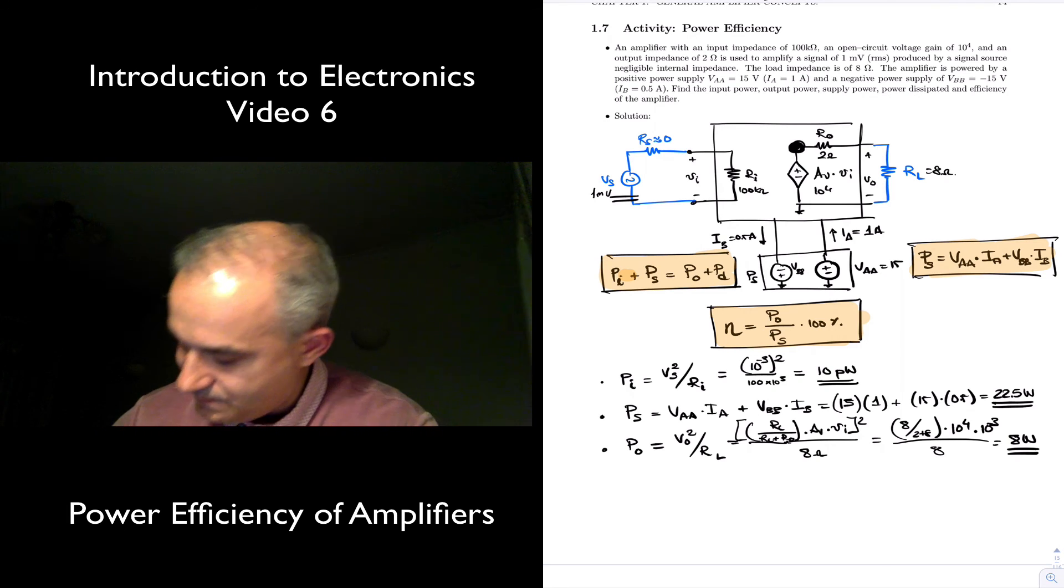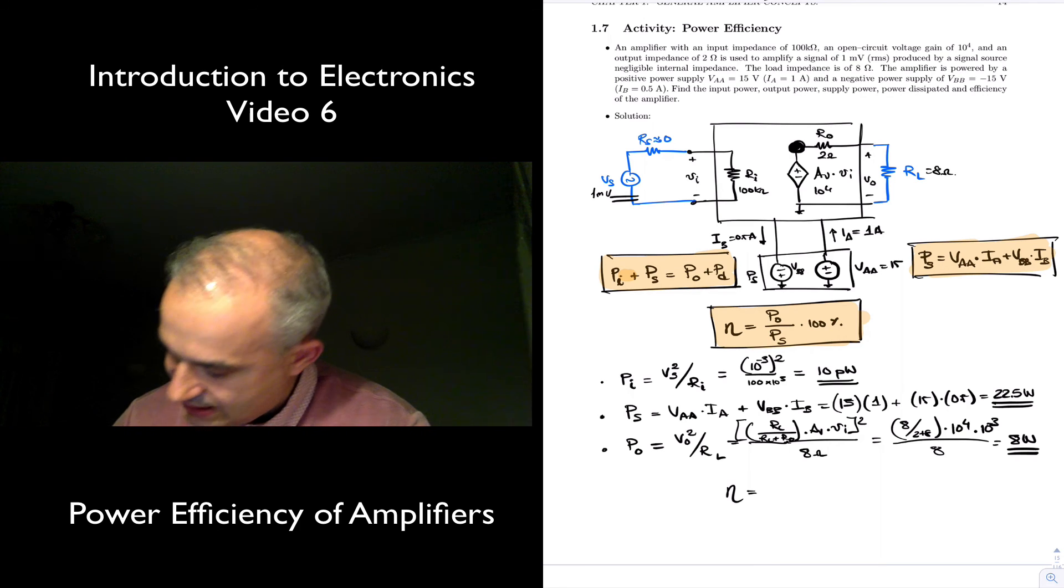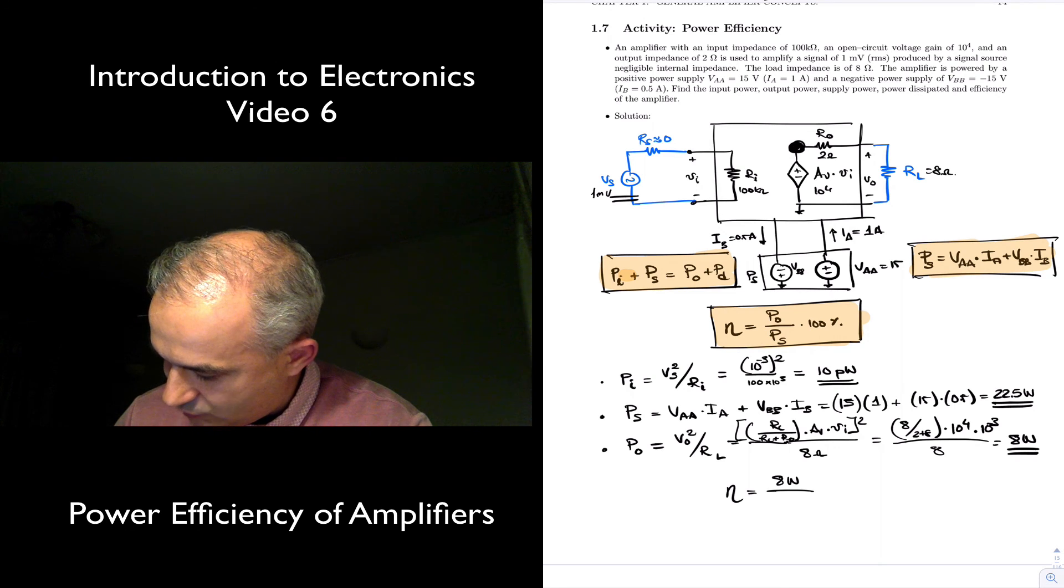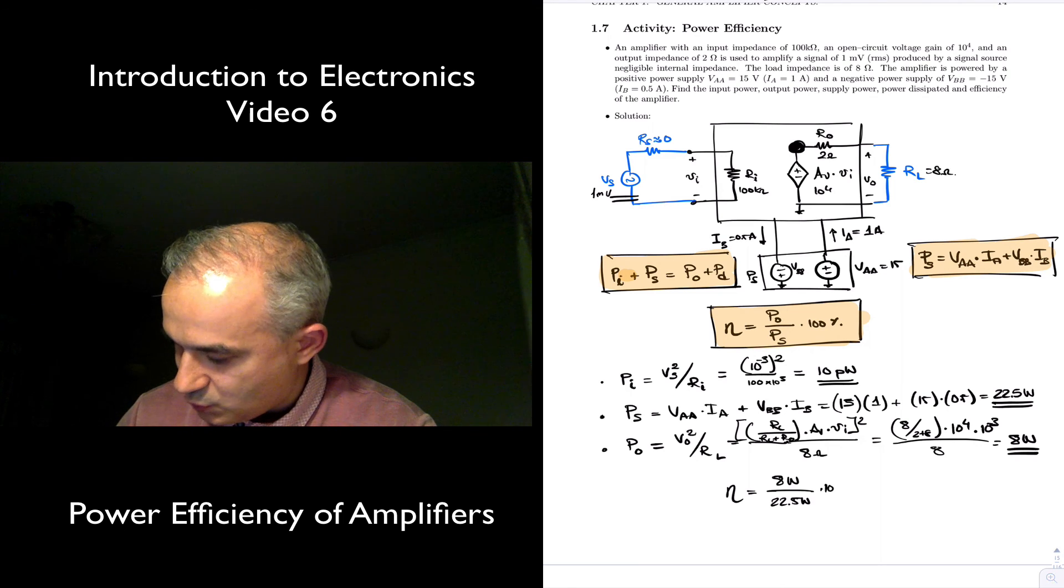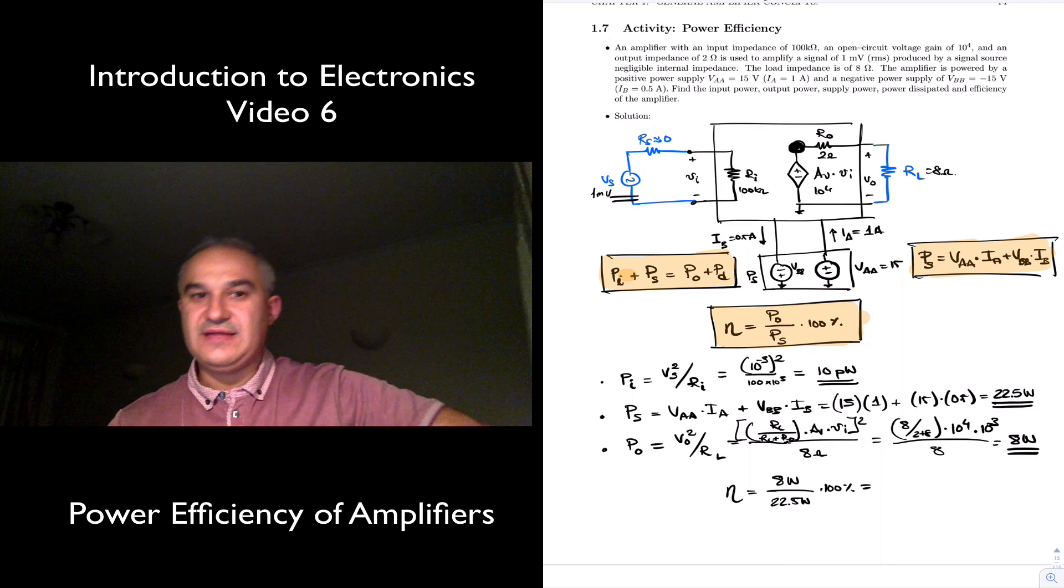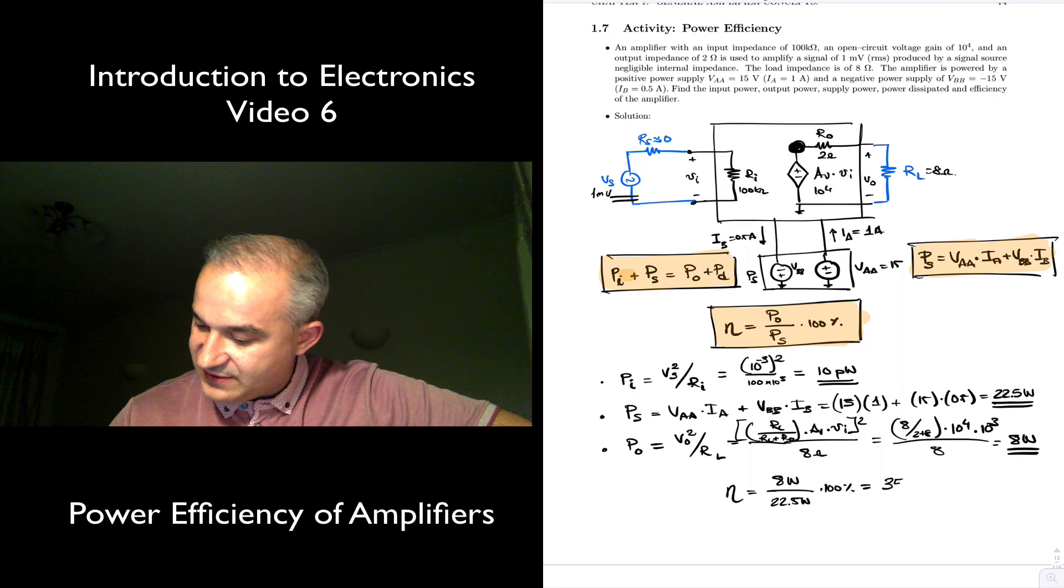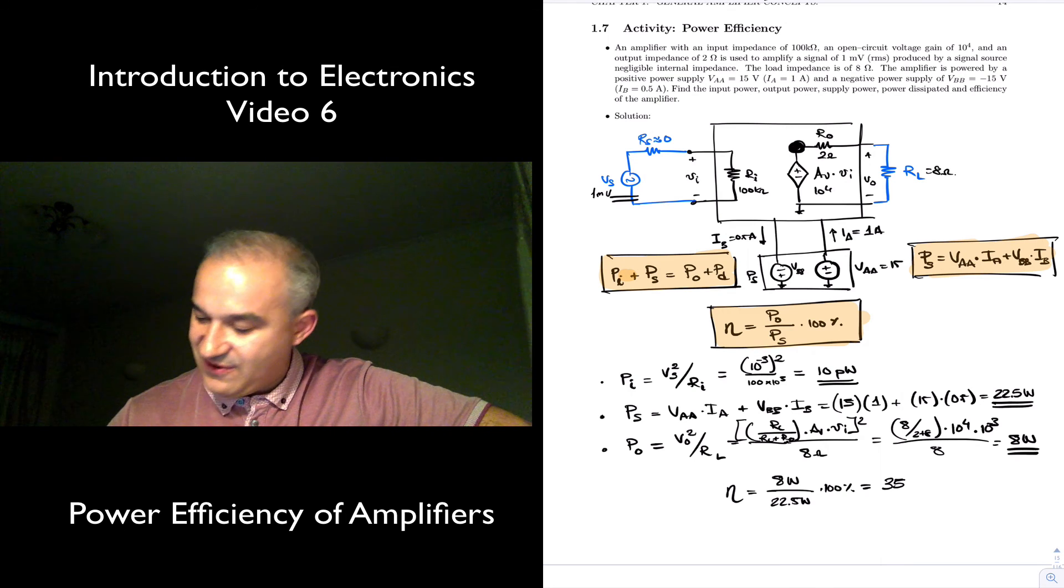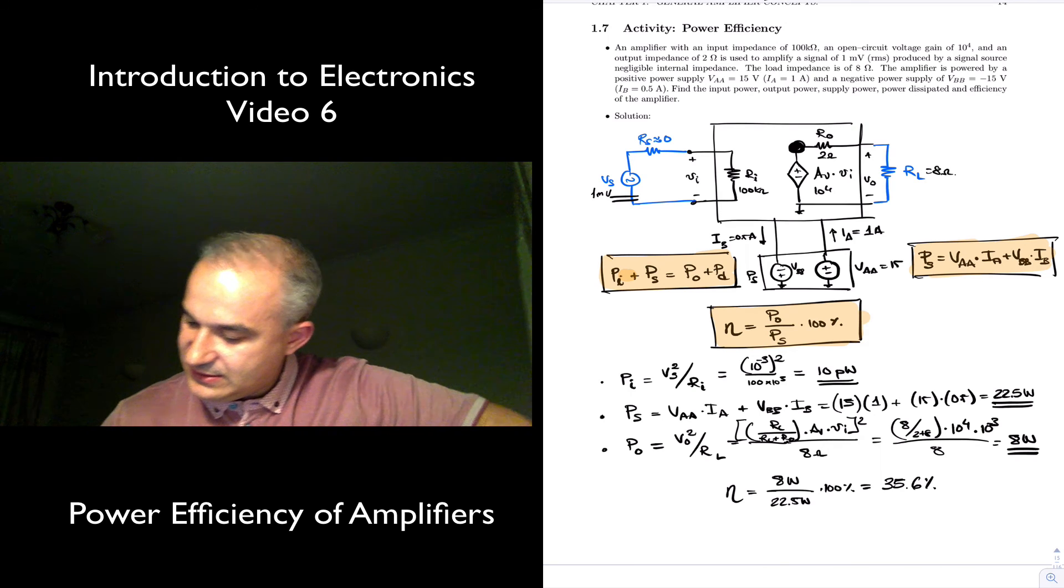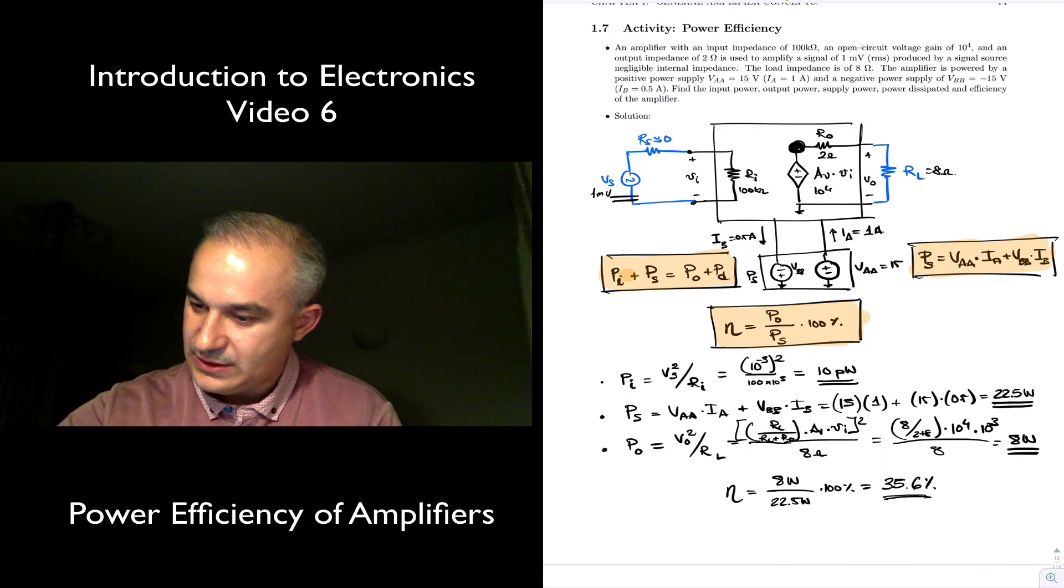And so with that, the efficiency, we can calculate it as 8 watts in the output divided by 22.5 watts and supply times 100%, so 8 divided by 22.5, that's approximately 35, but 35.6% efficiency. So I think we got it.